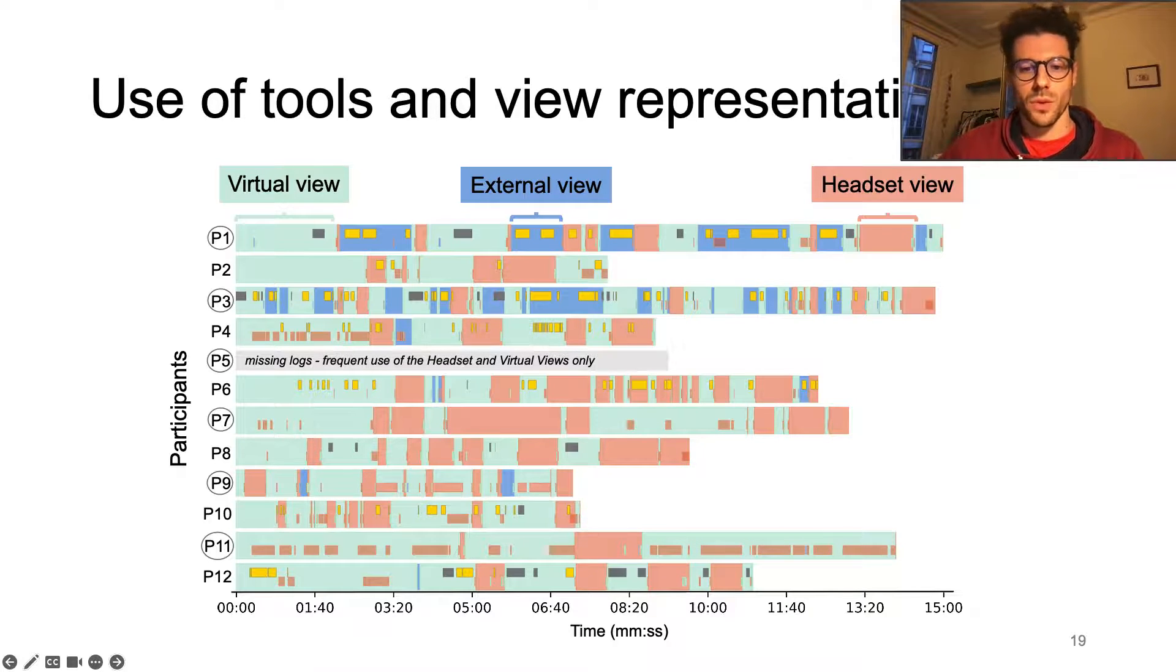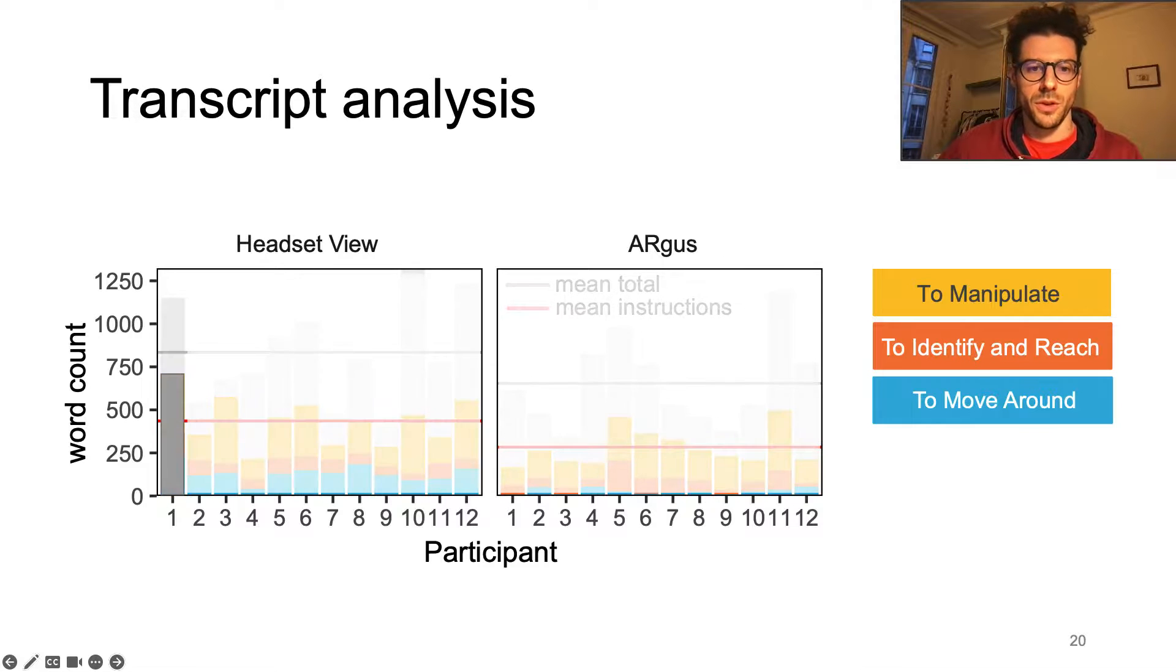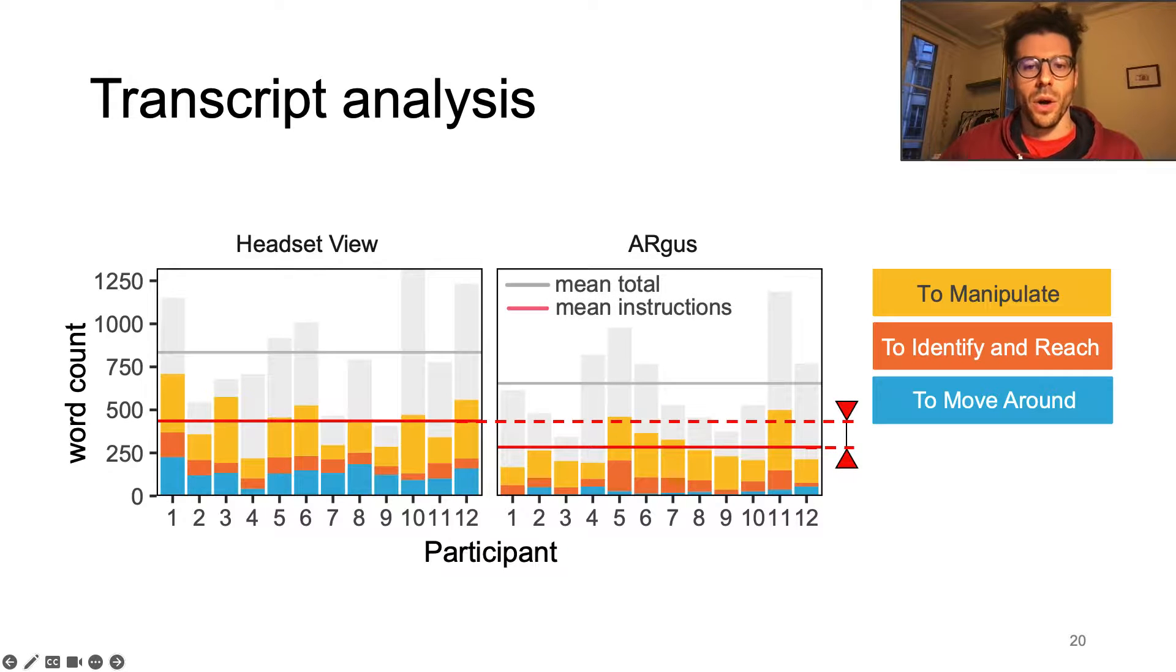We transcripted audio recording during each session and counted words pronounced by participants. We identified words used for instructions and classified them depending on whether it was to manipulate objects, identify or reach objects, or ask the experimenter to move around. Overall, the Argus users' interface reduced the number of words that belong to instructions. Surprisingly, further analysis showed no clear difference in the number of words used by participants to guide the experimenter on how to identify, reach, and manipulate objects.